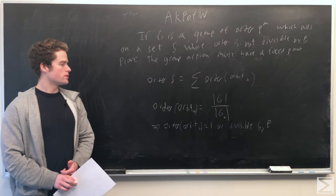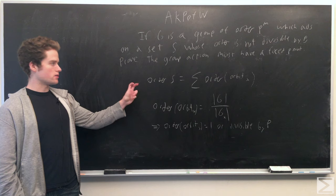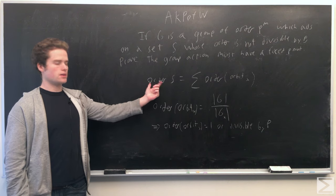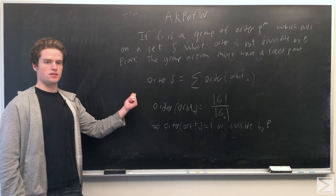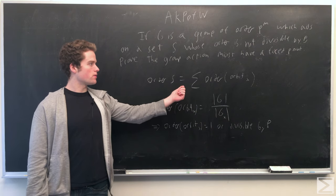So to show this, we really just want to make use of two equations. So first, S can be divided up into equivalence classes, and each equivalence class is an orbit of X.